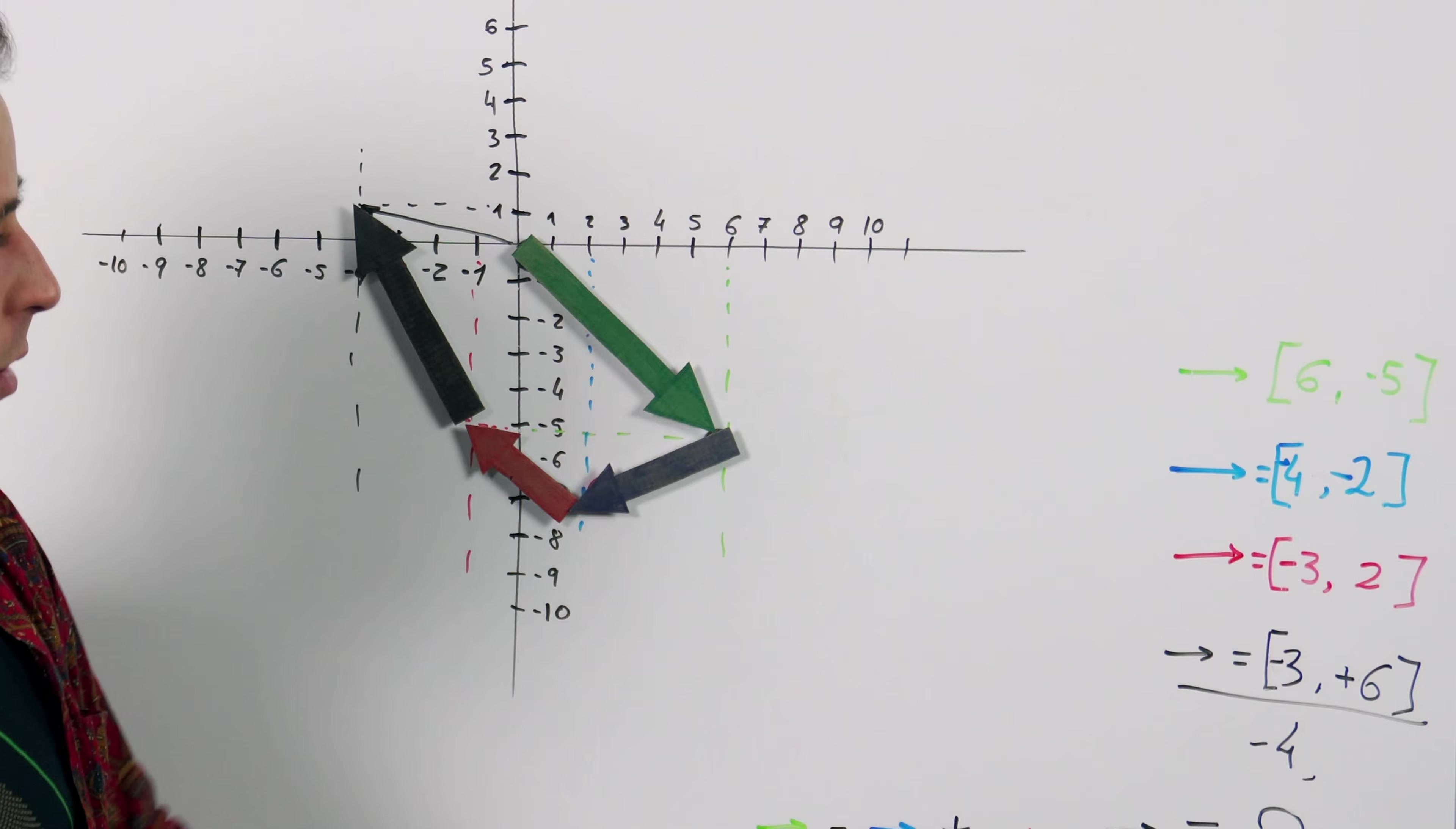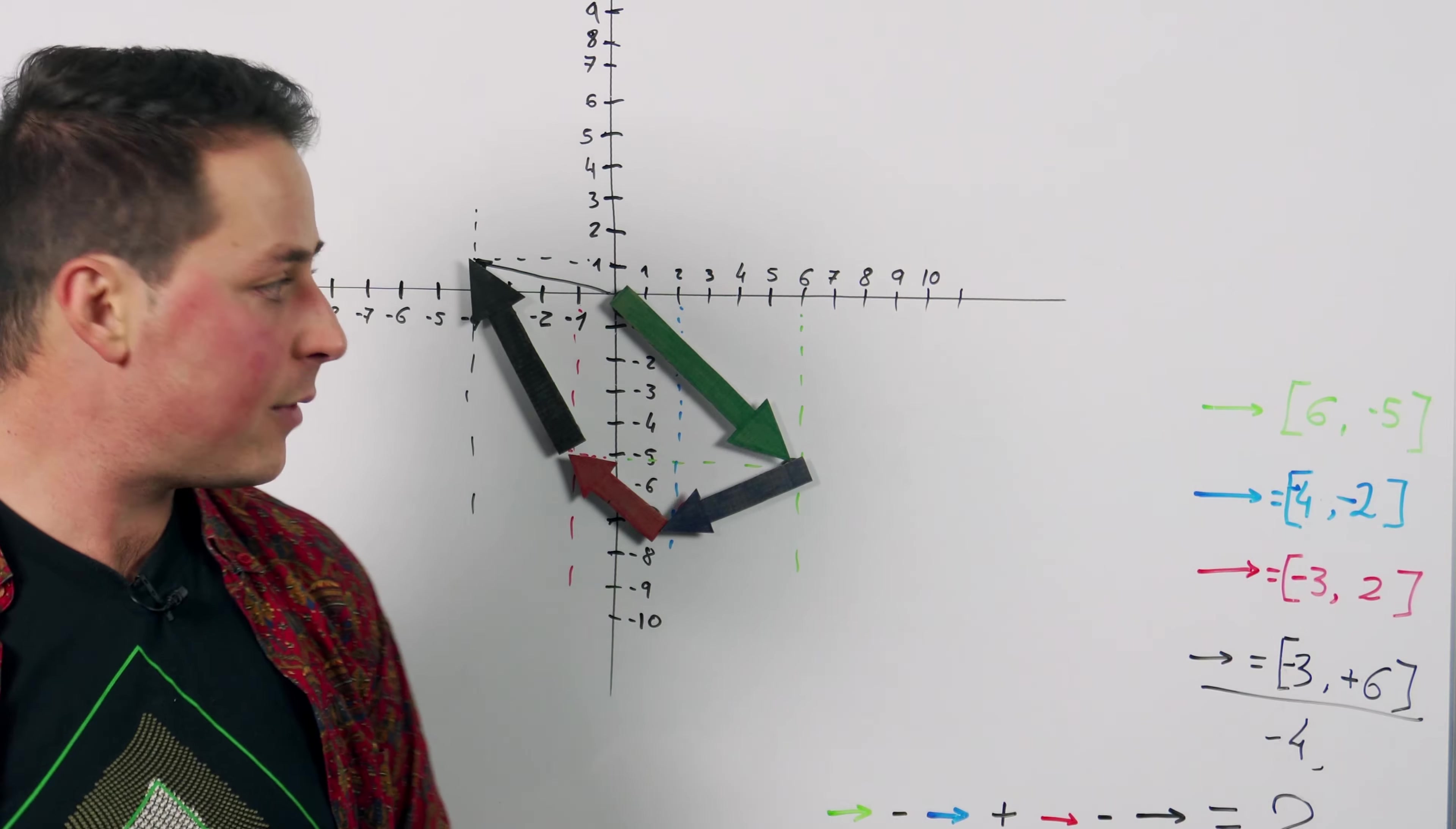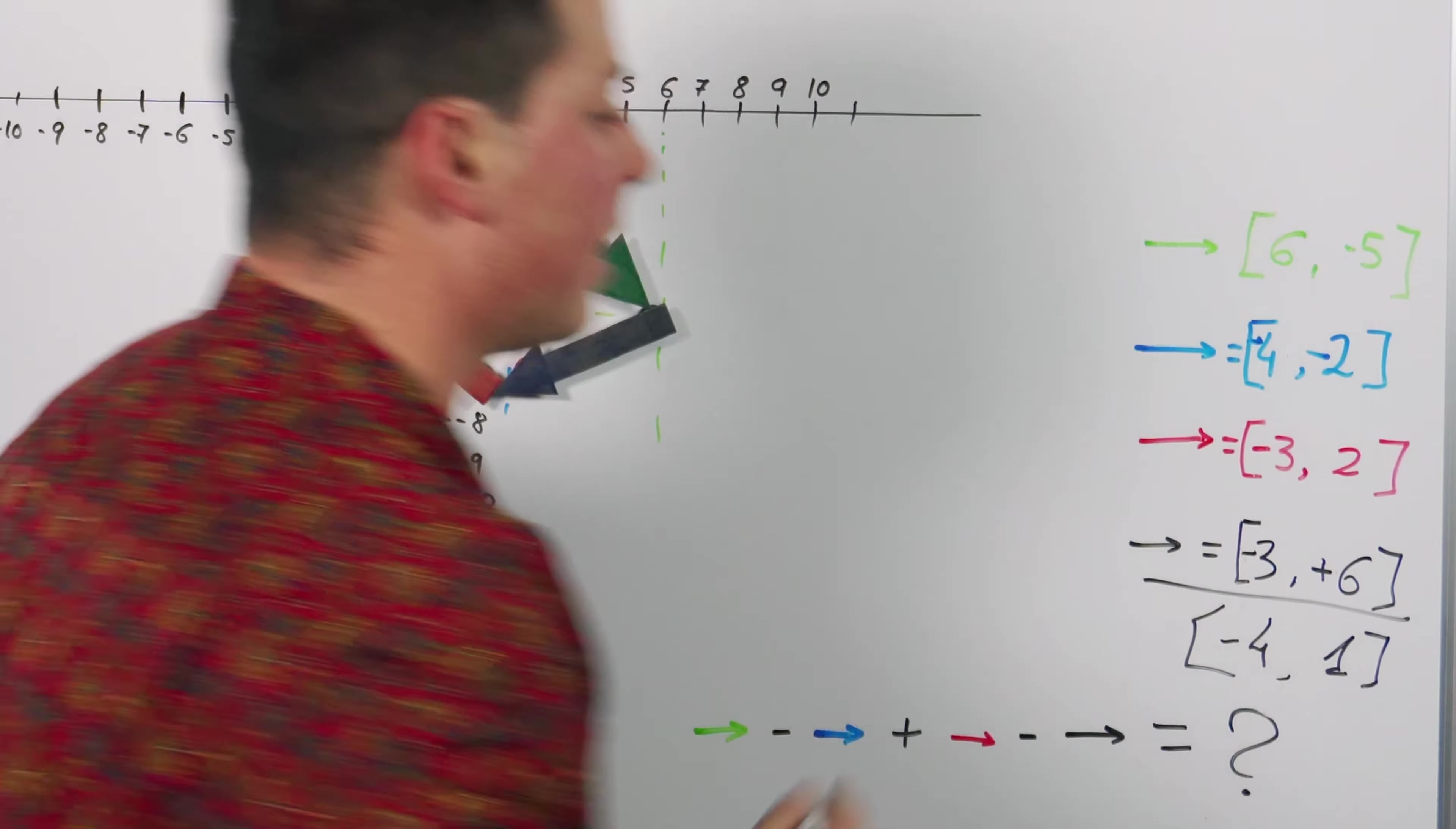For the y component we have plus 6 plus 2 which is 8 and we have minus 5 minus 2 which is minus 7. So 8 minus 7 equals 1 positive. And this is our result which is exactly the same we got in the graph.